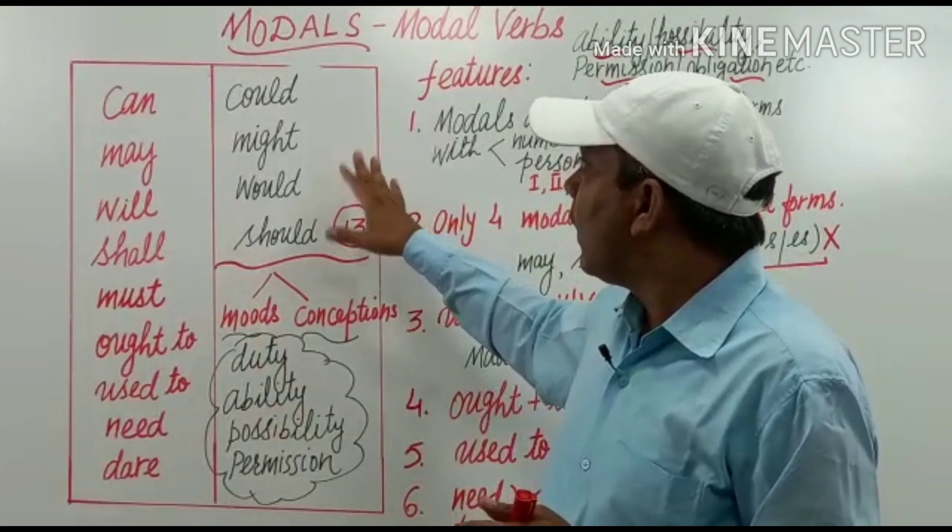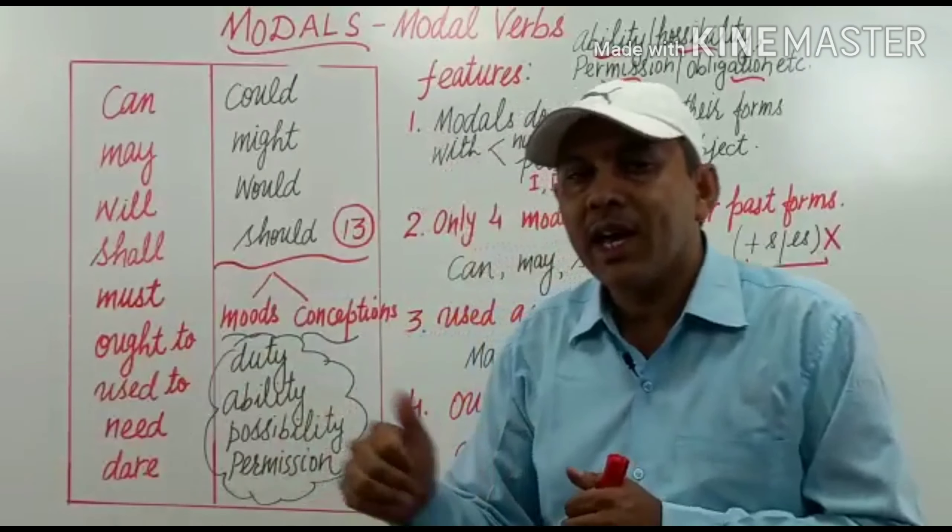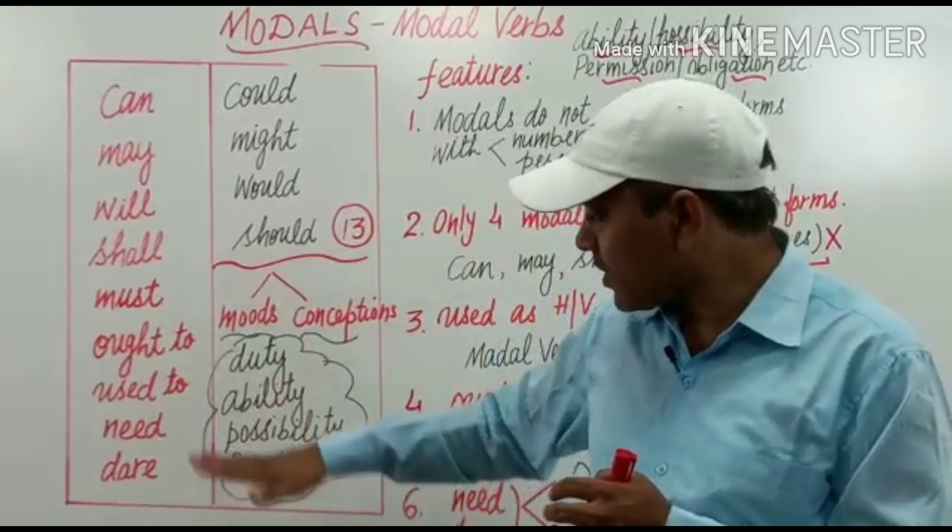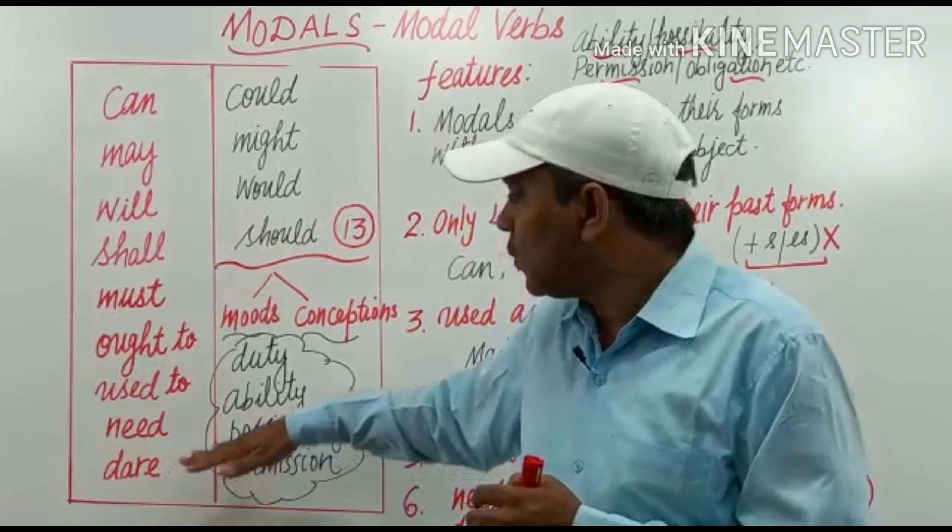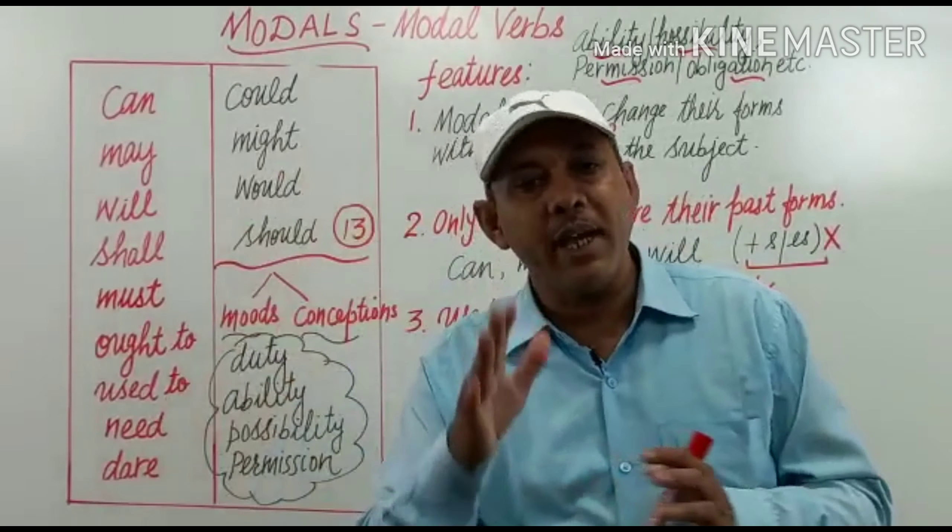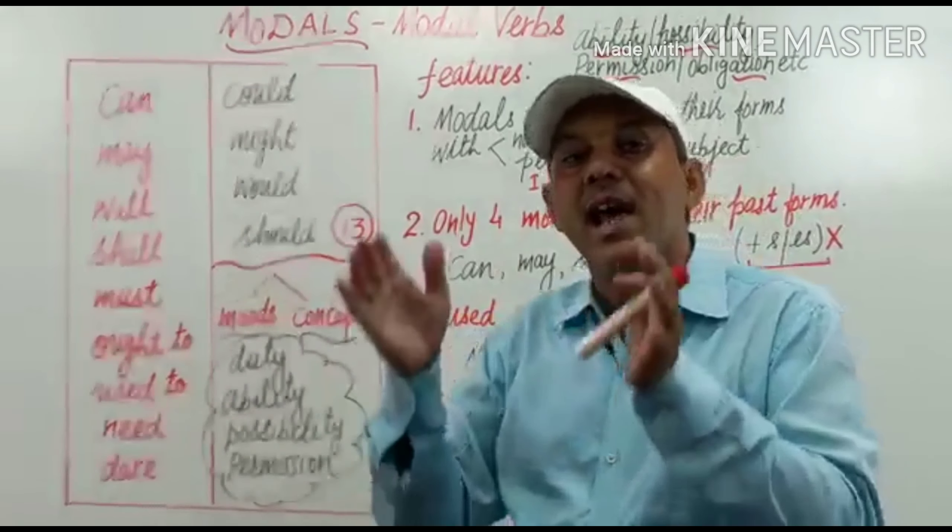Unlike primary auxiliaries, they can't be used as ordinary verbs except a few, except need and dare. They can't be used as main verbs in sentences. They are used as helping verbs.